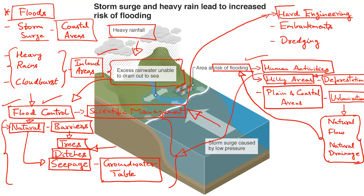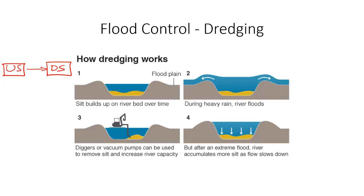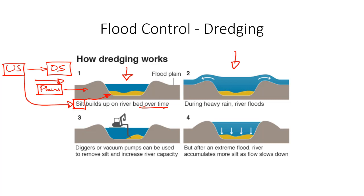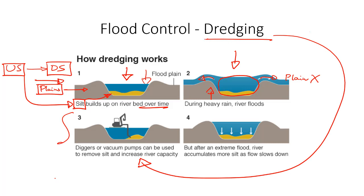Two of the most popular hard engineering techniques include the construction of embankments along the flood plains and the dredging of sediments deposited along the flood plains. As rivers flow from upstream to downstream areas, they bring silt and sediment that gets deposited in the plains, which are highly prone to flooding. This deposition reduces the drainage channel's carrying capacity, and during the rainy season when there is a sudden high-volume discharge, the channel cannot handle the excess water and it spills over into the plains. Regular dredging uses engineering equipment to excavate the silt and sediment from the bottom of the drainage channel to increase its carrying capacity.